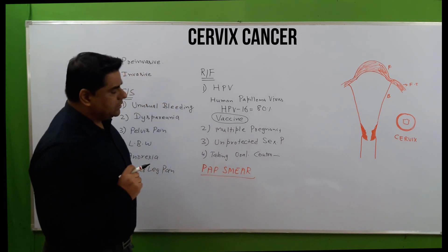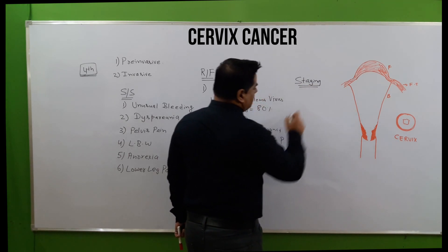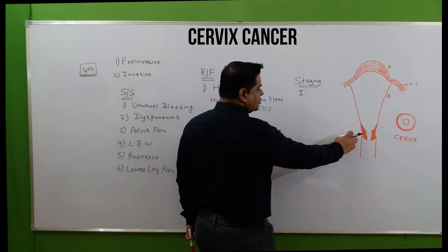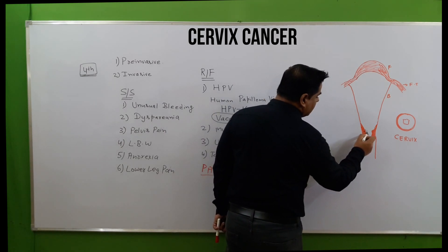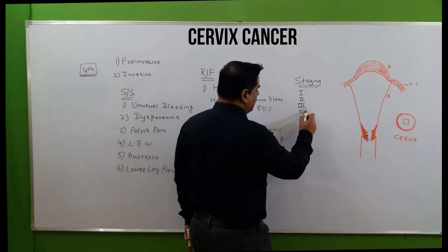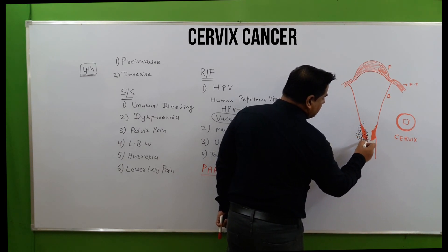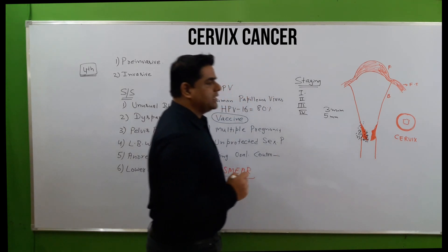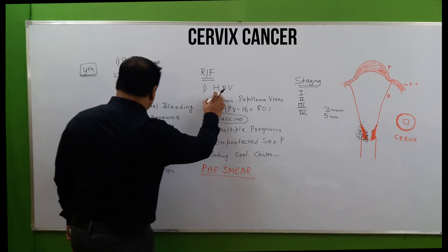Let's discuss staging of cervical cancer. In stage one, cancer cells are limited to the cervix area only. In stage two, the cancer spreads and engulfs the vaginal opening and internal and external os. In stage three and four, it covers pelvic organs, and stage four involves metastasis affecting abdominal organs. Cancer size increases from 3 mm to 5 mm in the staging progression.